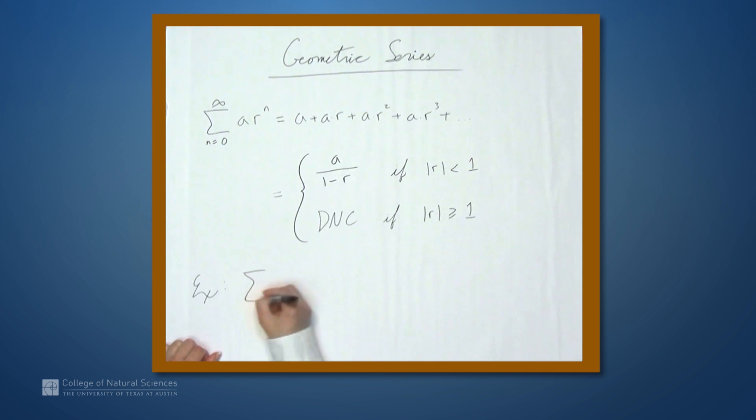Let's look at the sum from n equals 0 to infinity of 7 times 1 fifth to the n. Well, by the formula a over 1 minus r, let's identify a and r first. a is 7, and r is the thing being raised to the n's power, so r is 1 fifth.